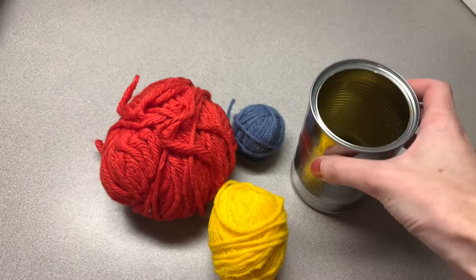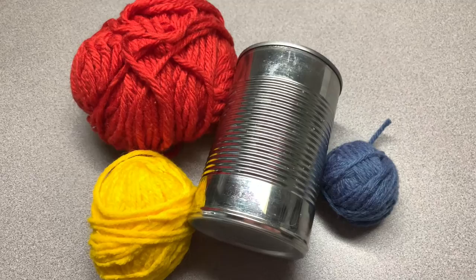Today we're going to use some yarn and a tin can to make this really cute braid wrapped tin can fall decor item.